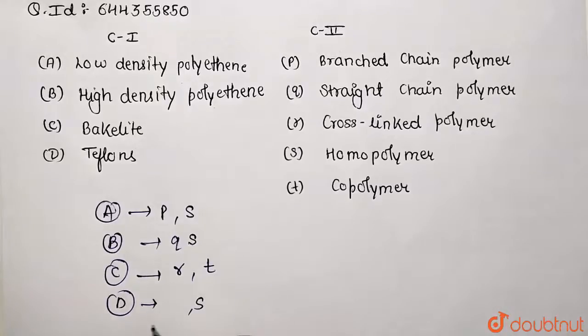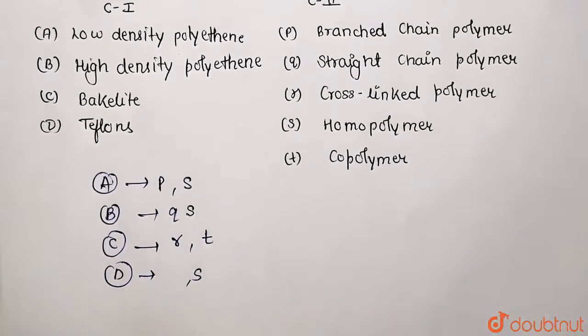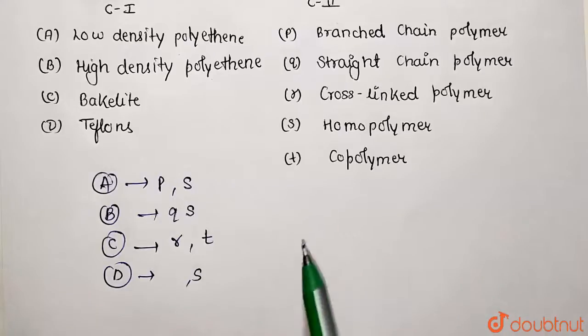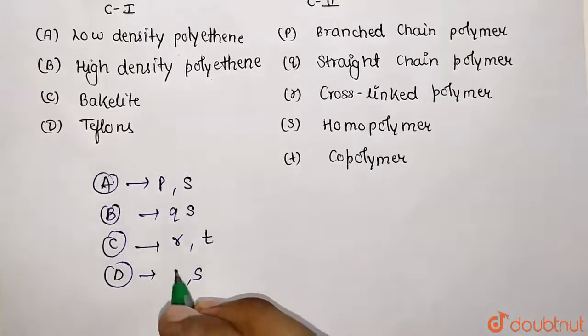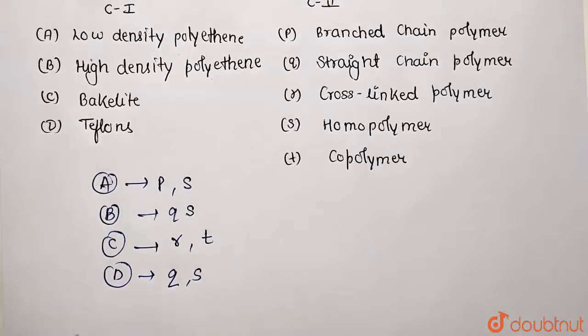If we look at their structure, they have a linear structure because the simple unit tetrafluoroethene is combining, making it a linear chain polymer. So option Q is also going to be its answer. These are the matching sets which we have found out, and this is the solution for the problem. Thank you.